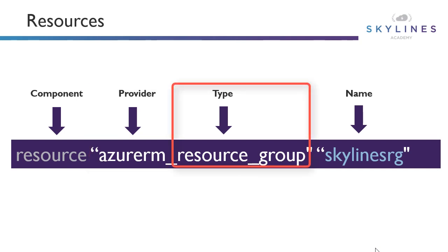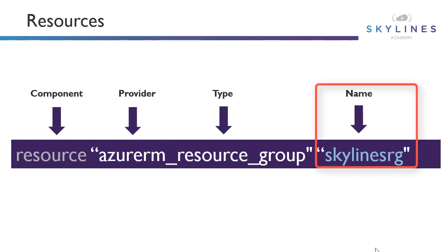We then define our resource type — in this case, a resource group is the example. So if I'm creating a resource group in Azure, the provider is Azure RM and the type of resource I'm creating is a resource group. Then I give it a name, and this is a name for Terraform — it isn't the name that's going to be created in Azure. This is the name referenced throughout your code. If you want to refer back to this object, in my case I'm calling it Skylines RG, and anything that depends on it would use this name.